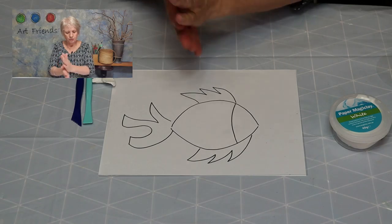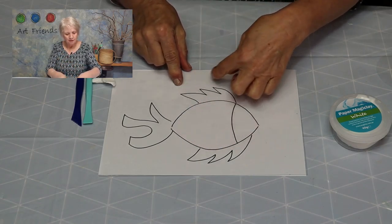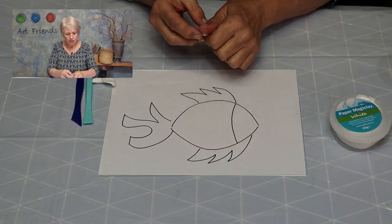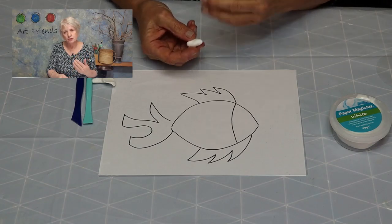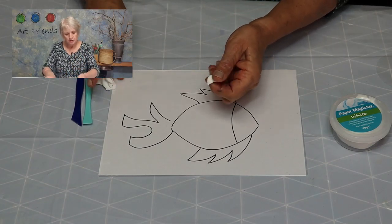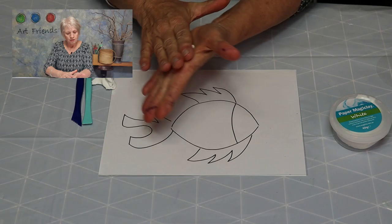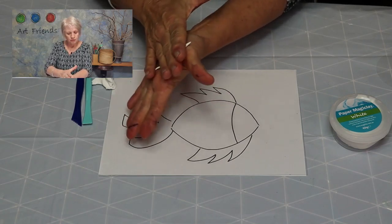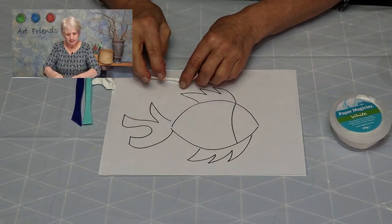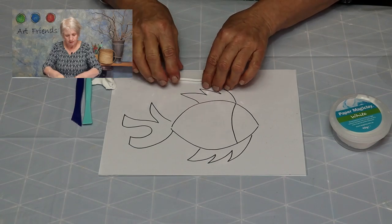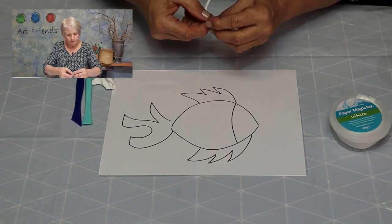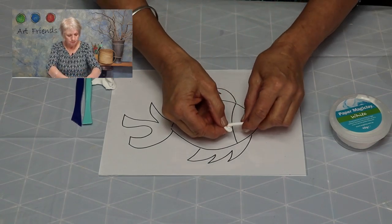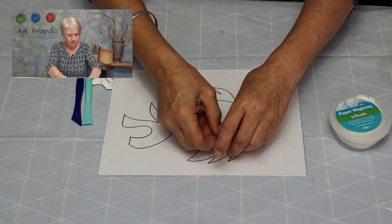Now we're going to fill up our fish with lots of different shapes. But first of all, I'm going to do some spirals. With your magic clay, roll, roll, roll some little spirals, some little snakes. And then we're going to roll them up and pop them on the side of the fish.